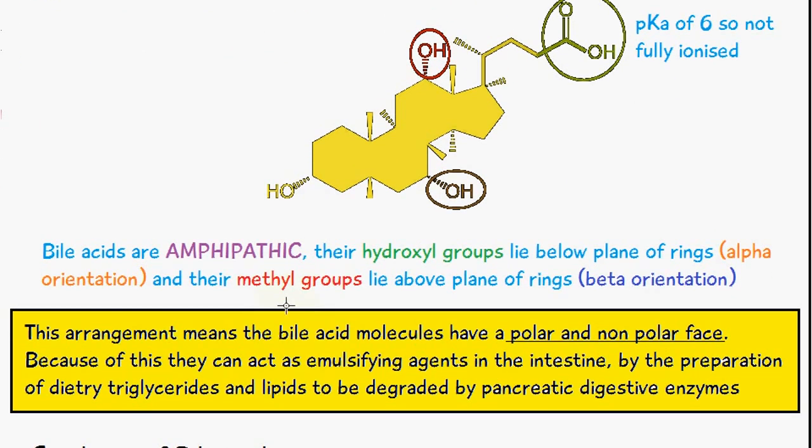This arrangement means the bile acid molecules have a polar and non-polar face. Because of this they can act as emulsifying agents in the intestine by the preparation of dietary triglycerides and lipids to be degraded by pancreatic digestive enzymes.